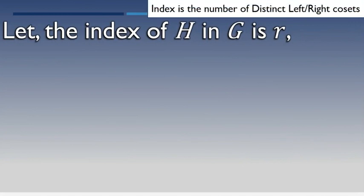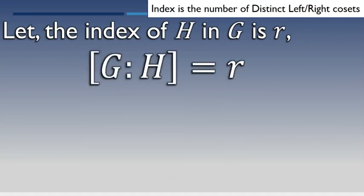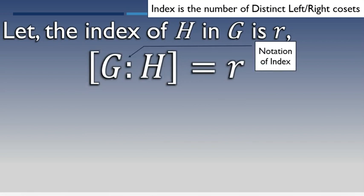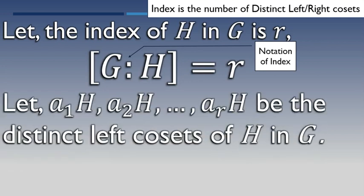Let the index of H be r, which means the number of distinct right and left cosets of H is r. This is the index symbol. We are taking the number of distinct left cosets of H as r. Let the left cosets be a1H, a2H, etc., arH — these are the distinct left cosets of H in G.